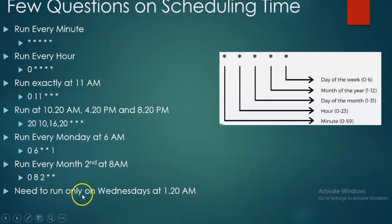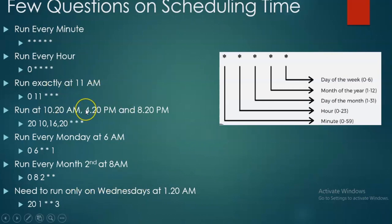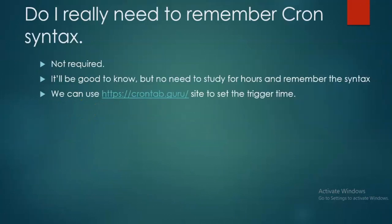Need to run only on certain days at 1:20. Minutes, hours, weekday — Sunday is zero, Monday is one, Tuesday is two, Wednesday is three. These are a few examples. In the next one we will see an important topic: do I need to really remember the cron syntax? No — let's see how we can handle that.